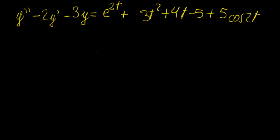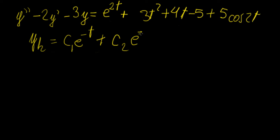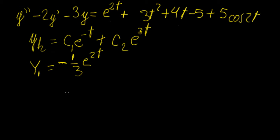We're still going to take the homogeneous solution, which we found in the previous videos to be c1·e^(-t) + c2·e^(3t). Then we take the individual particular solutions for each separate function. For the first one, we call that Y1, which equals -1/3·e^(2t), as found in the previous examples.